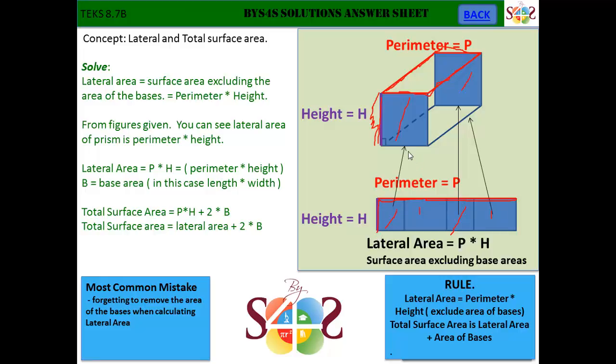The base area will be the length times the width. That would be the base area. And you have two bases. To get total surface area, you would add up the lateral area plus two times your base area. And your base area basically is the length times the width.